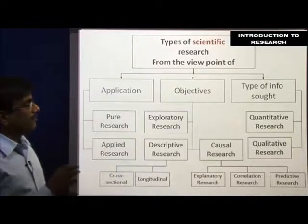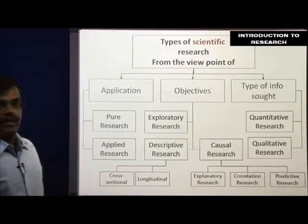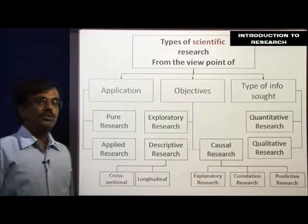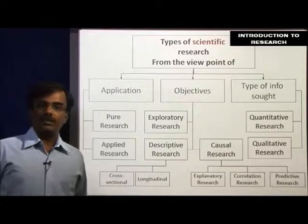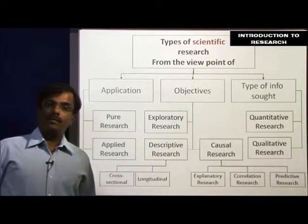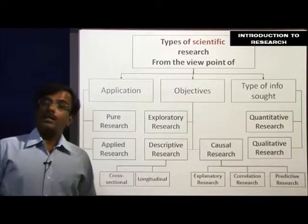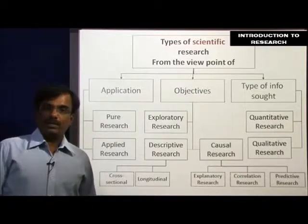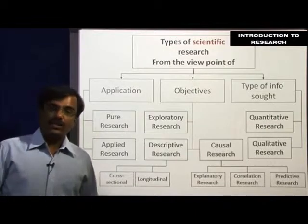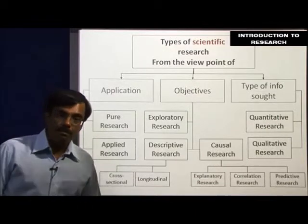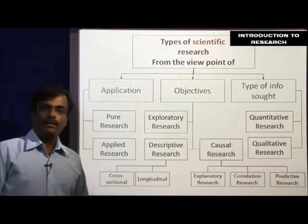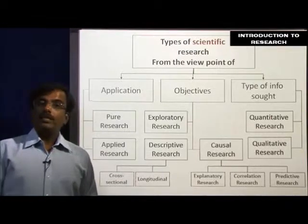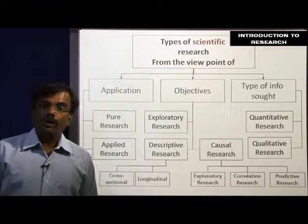From the point of view of type of information sought, there are two types of research: one is quantitative and the other is qualitative. Quantitative research is essentially number-oriented, whereas qualitative research is not as much number-oriented.